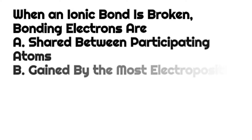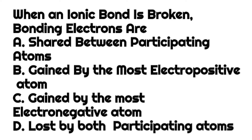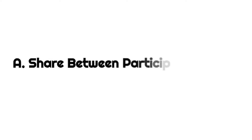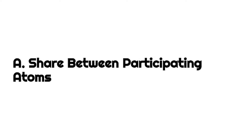When an ionic bond is broken, bonding electrons are — a) shared between participating atoms, b) gained by the most electropositive atom, c) gained by the most electronegative atom, d) lost by both participating atoms. Our answer is a) shared between participating atoms — that is what happens when ionic bonds are broken.